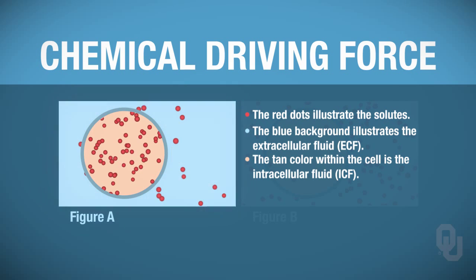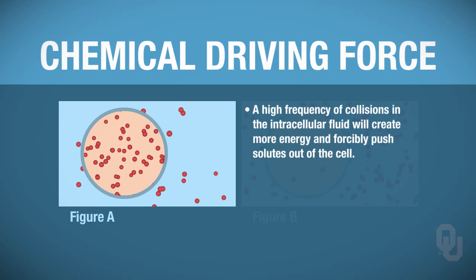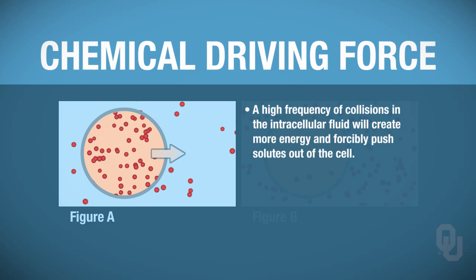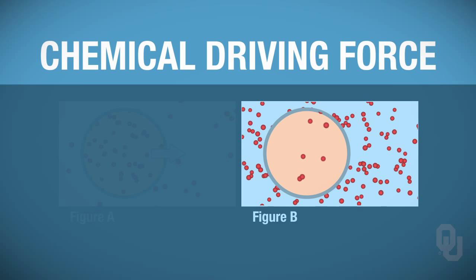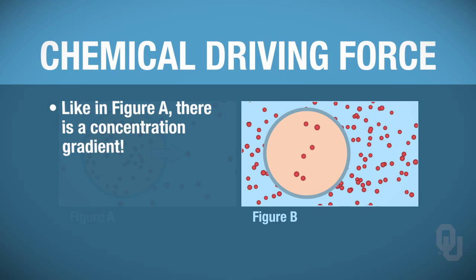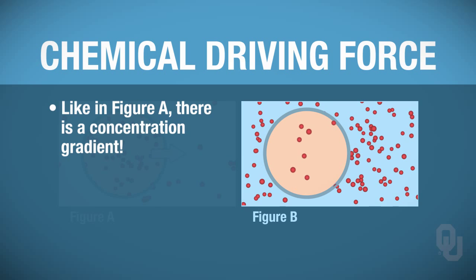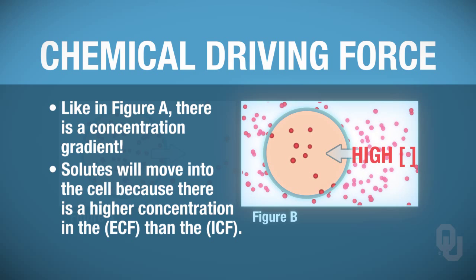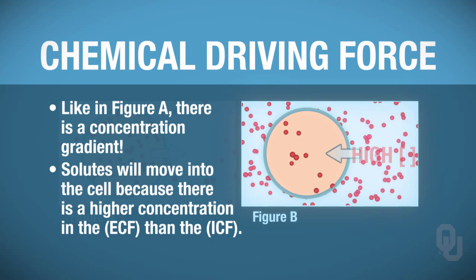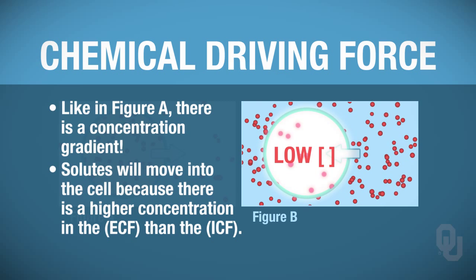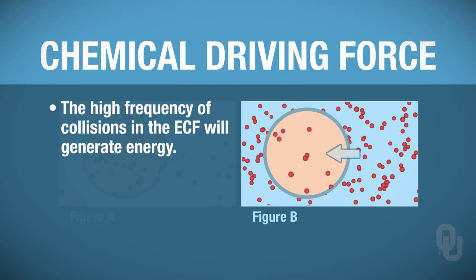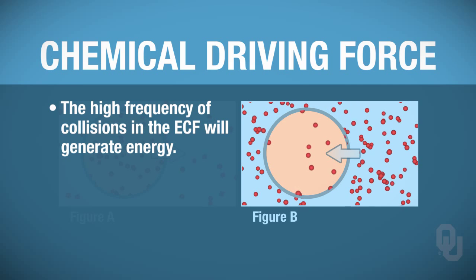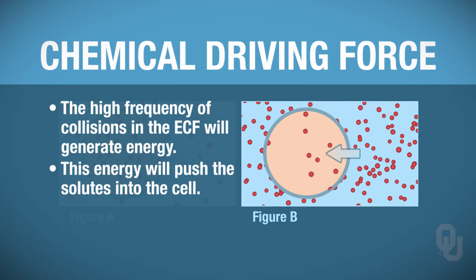In this case, you have a high frequency of collisions in the intracellular fluid, which generates a lot of energy and pushes those solutes out of the cell. In Figure B, we have a similar situation—yes, there is a concentration gradient—but this time the gradient drives movement into the cell. Solutes want to move into the cell because there is a higher concentration of solute in the extracellular fluid and a lower concentration in the intracellular fluid, generating more collisions and energy outside that push solutes inward.